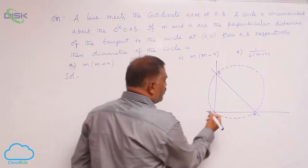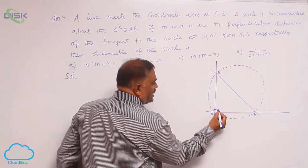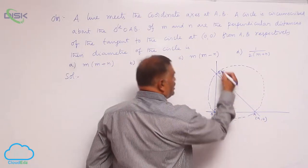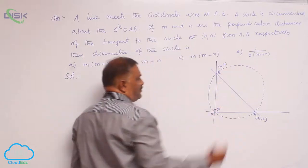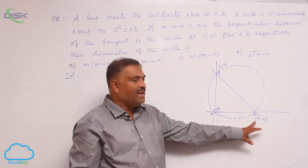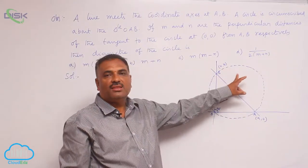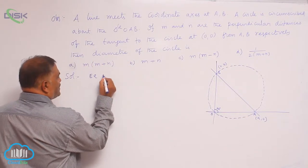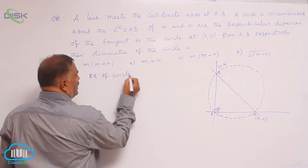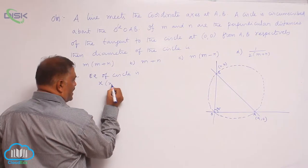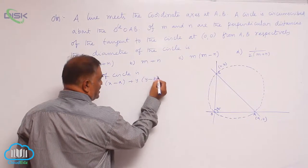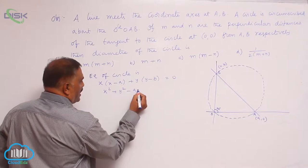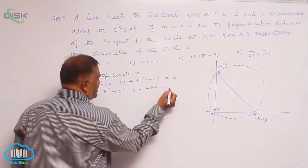Since O is the origin, it is a point on the semicircle, automatically at 90 degrees. Assume A is A comma 0 and B is 0 comma B. A(a,0) and B(0,b) are the ends of the diameter of the circle. So the equation of the circle is x(x minus A) plus y(y minus B) equals 0, which gives x squared plus y squared minus Ax minus By equals 0.